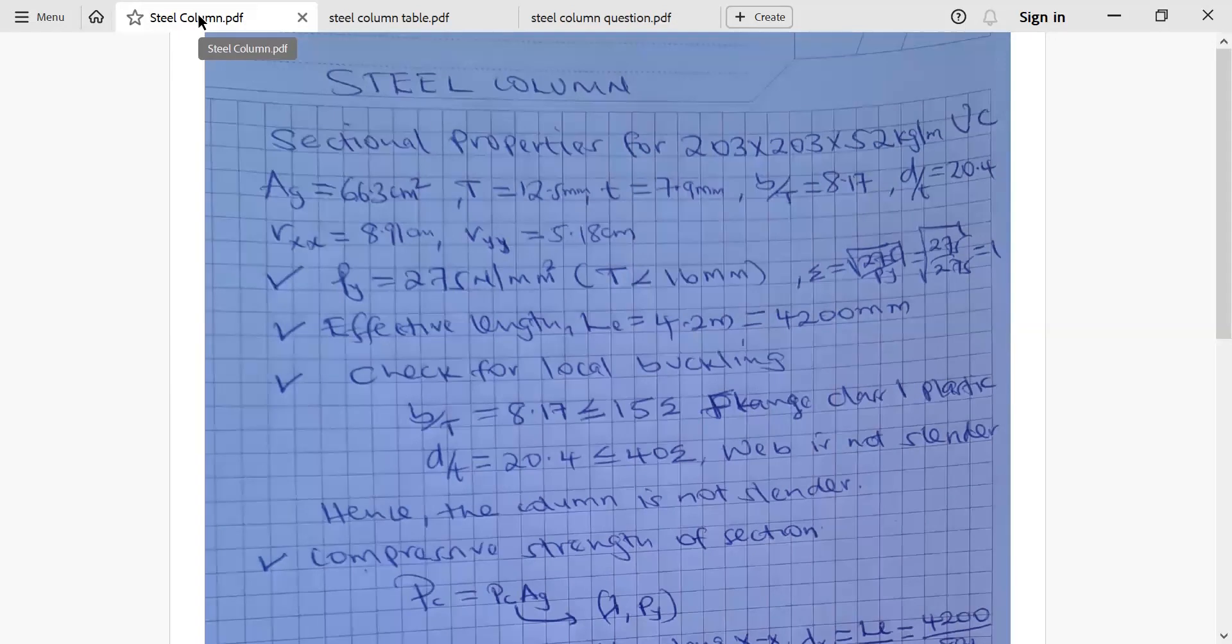We have area of the section. We have thickness of flange. We have thickness of web. We have the ratio B over T, ratio D over T. We have radius of gyration along X, which is Rxx and radius of gyration along Y, which is Ryy.